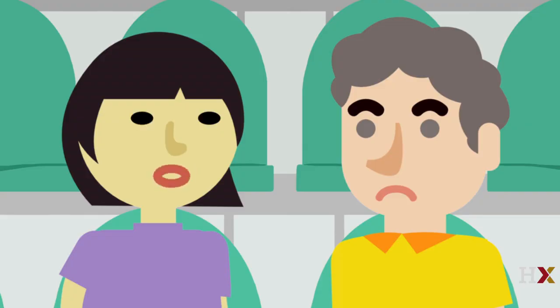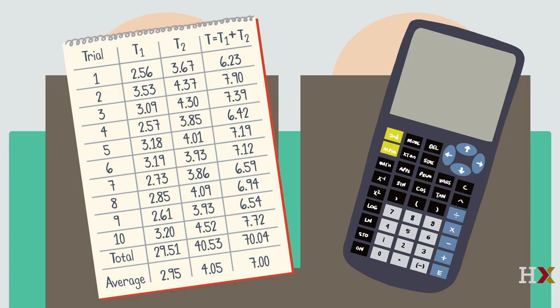Oh, Colin, you don't need to do all those tedious calculations. We only need to add two numbers to get the average of T. The average of T is the average of T1 plus the average of T2. So Lyra's average overall time in the past was 2.95 seconds plus 4.05 seconds, which is 7 seconds.